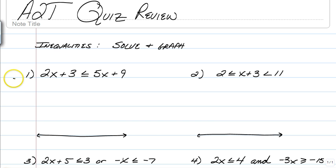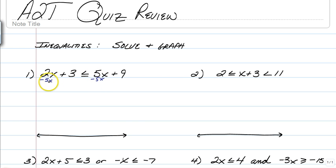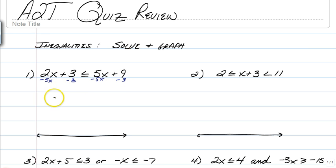So, inequalities — how to solve and graph them. When you solve, you're pretty much solving the same way you would solve any other equation; there's just a different symbol. So we're going to subtract our 5x from both sides and subtract our 3 from both sides. That will give us negative 3x is less than or equal to 6.